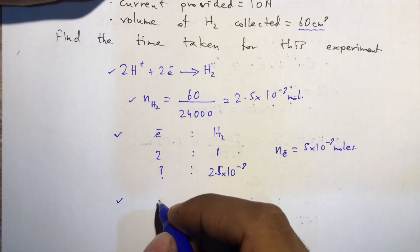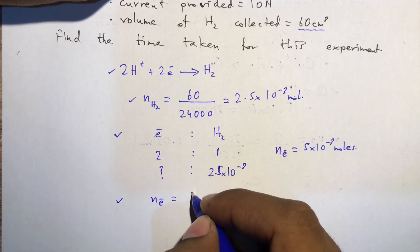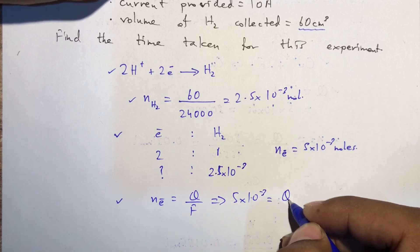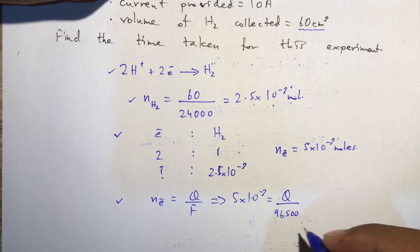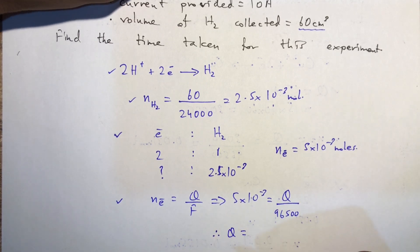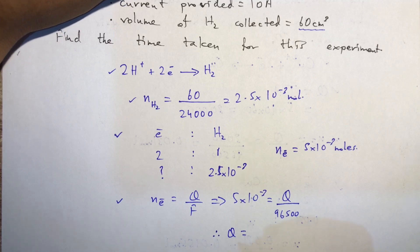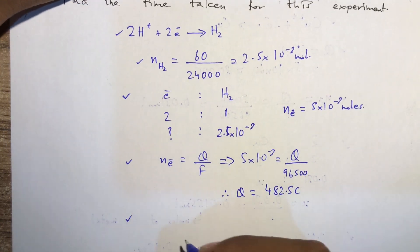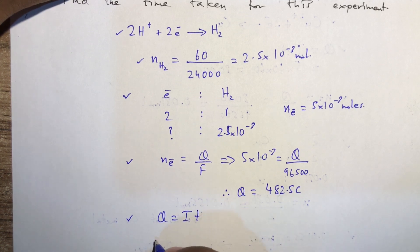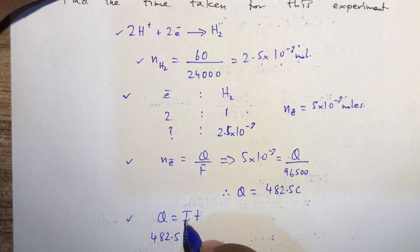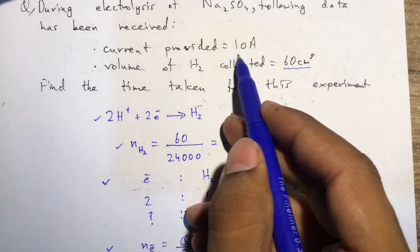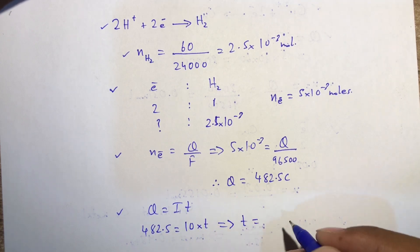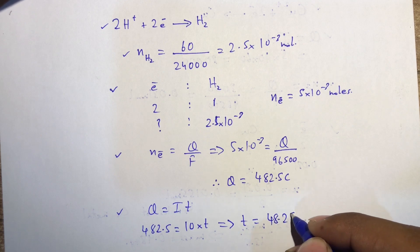Using n = Q/F, we have moles of electrons = 5 × 10⁻³ and F = 96,500, so Q = 5 × 10⁻³ × 96,500 = 482.5 coulombs. Then using Q = It: 482.5 = 10 × t, so time = 48.25 seconds.